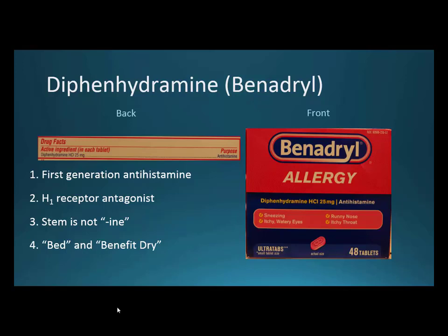Benadryl is also used in a positive way in PM products like Tylenol PM. It's an H1 receptor antagonist — the H2 receptor antagonists like ranitidine and famotidine were covered in the GI section. You really want to be careful with stems. Diphenhydramine doesn't actually have a stem, but many YouTube videos talk about '-ene' as being a stem to recognize antihistamines. That's just a heuristic cognitive bias — a shortcut based on limited examples.